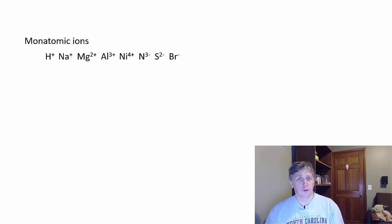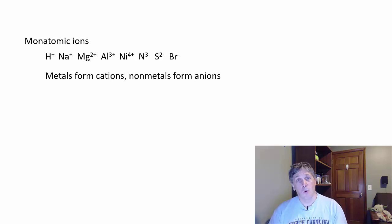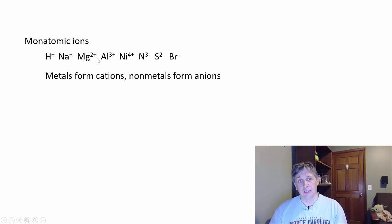Today we're going to do some general chemistry — talk about ions and ionic compounds. We'll start with the two types of ions. You have monatomic ions, which are ions made up of a single atom with a charge, from losing or gaining electrons. Metals tend to form cations — positive ions — while nonmetals tend to form anions — negative ions.